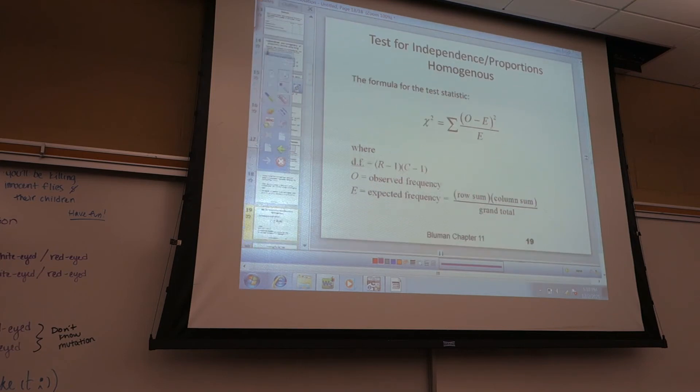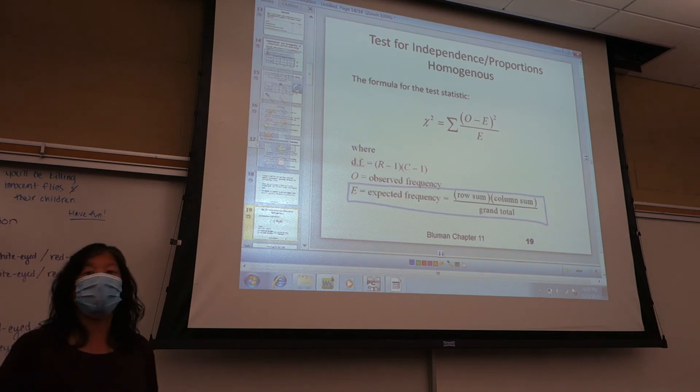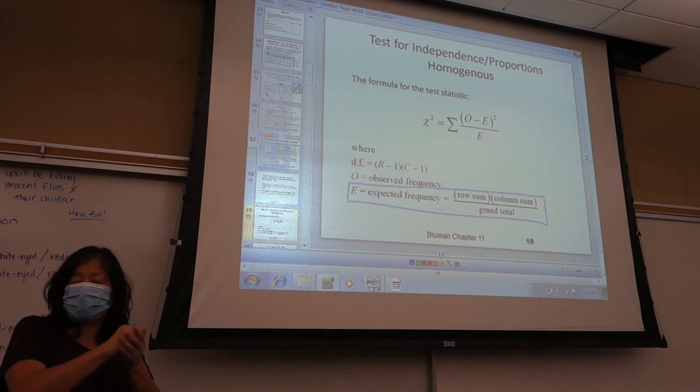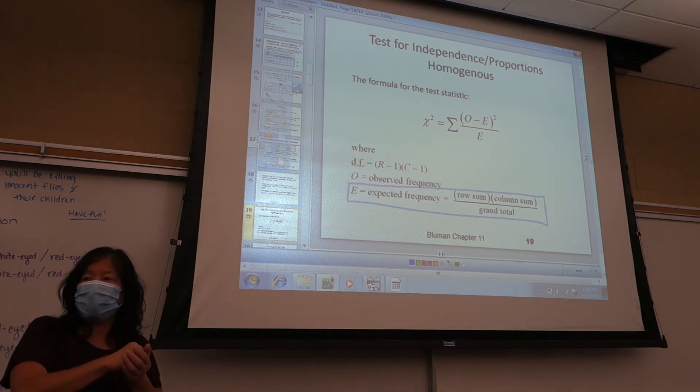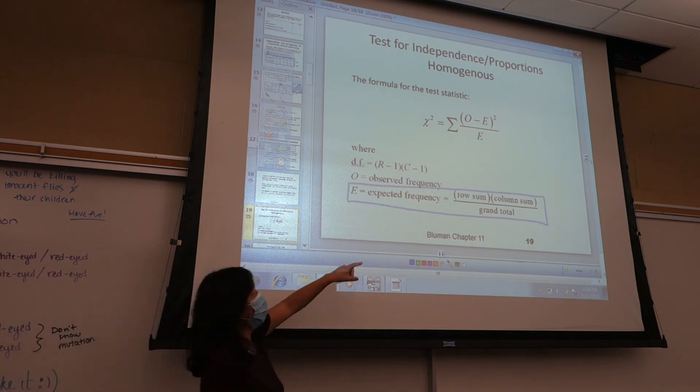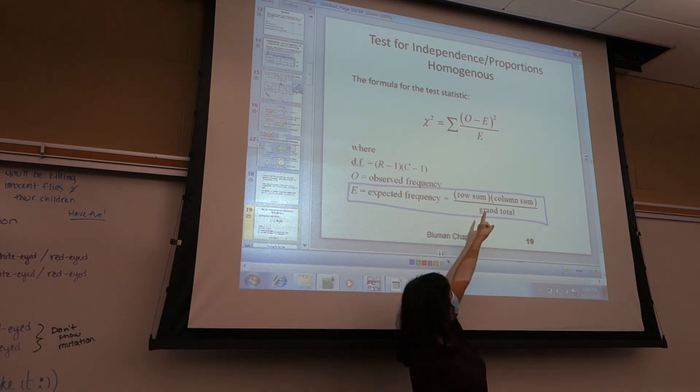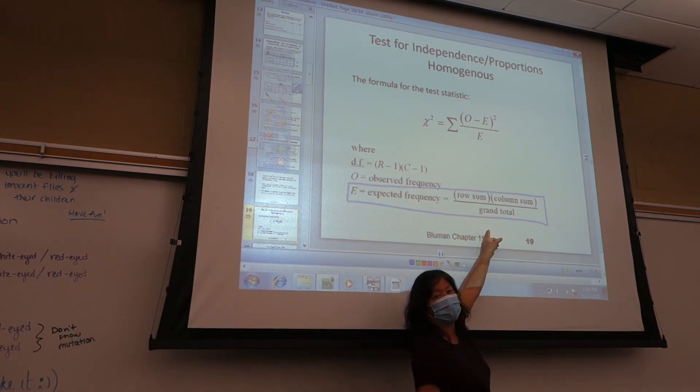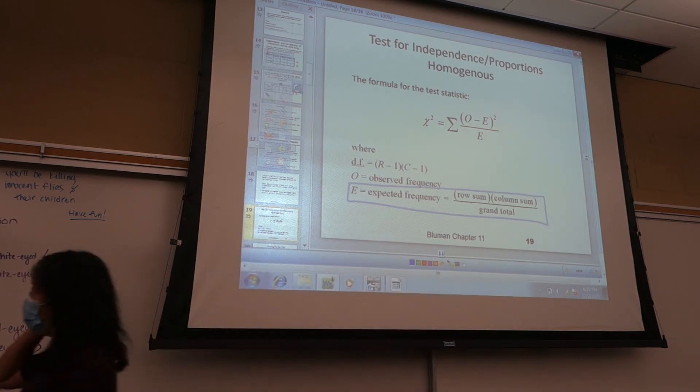There is one difference, though. The expected frequency is a little bit harder to find. Remember, you always have to compute them. And before, we would just take the total number of n and multiply by the proportion, the probability for that group. This one's a little bit harder. Take the row sum, multiply by the column sum, and divide by the grand total.